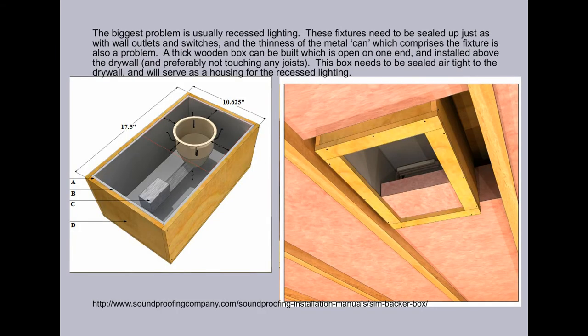The biggest problem is usually recessed lighting. These fixtures need to be sealed up just as with wall outlets and switches, and the thinness of the metal can which comprises the fixture is also a problem. A thick wooden box can be built, which is open on one end and installed above the drywall, and preferably not touching any joists. This box needs to be sealed airtight to the drywall and will serve as a housing for the recessed lighting.